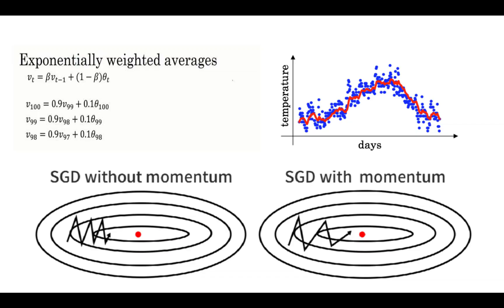Before explaining the difference between these three optimizers, we have to briefly cover what exponentially weighted average is, because in SGD with Momentum, RMSProp, and Adam optimizers, all of these generally use the same exponentially weighted average concept.